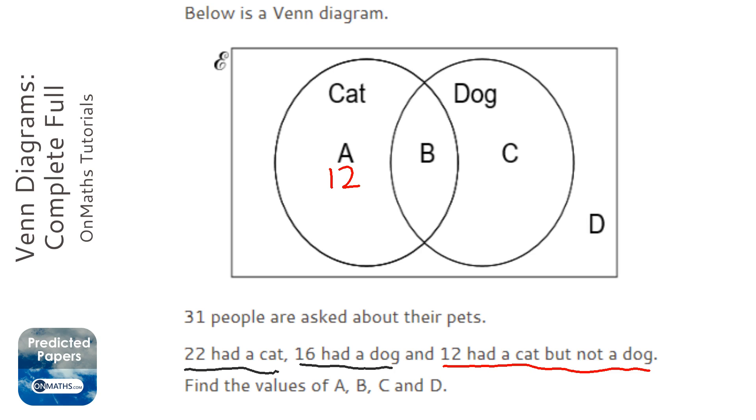The next one we can now fill out is this one. 22 had a cat. Well, if 12 didn't have a dog, that means that 10 must have had a dog as well to make that add up to 22.